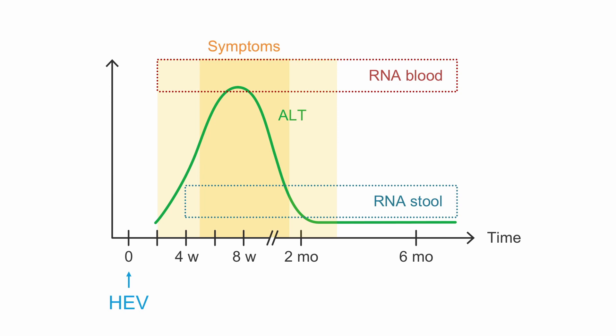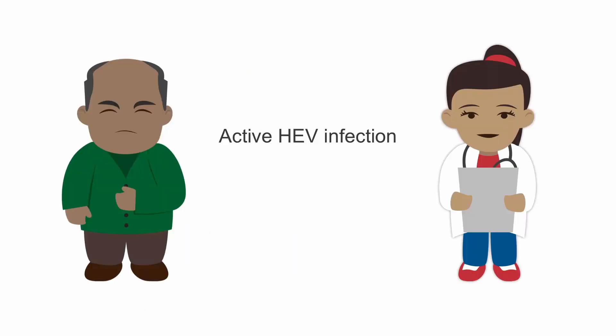His lab report shows elevated ALT levels as a sign of liver damage, but negative antibody tests. However, there is RNA detectable in his stool. Pete is suffering from an active, ongoing HEV infection.